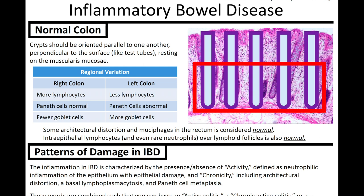Good morning everybody. Welcome back to Pathagonia. Today I'm going to talk about inflammatory bowel disease. I was curious before recording this episode just how many people worldwide inflammatory bowel disease affects. A quick Google search pointed out that roughly 10 million humans have and deal with inflammatory bowel disease — an incredibly common disease and something important to know for pathology residents and humans in general.